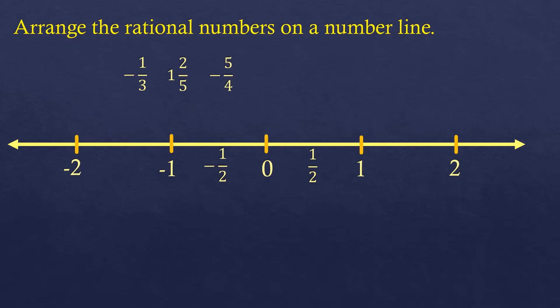The second one is negative 1 half, so it's on the left side of 0. It's 1 half, so it's exactly in between 0 and negative 1. That's why it's placed there.